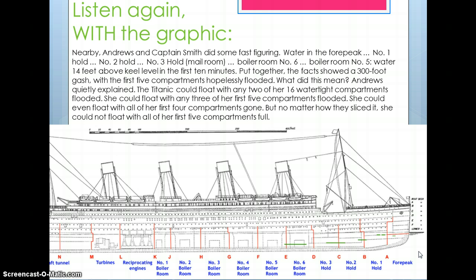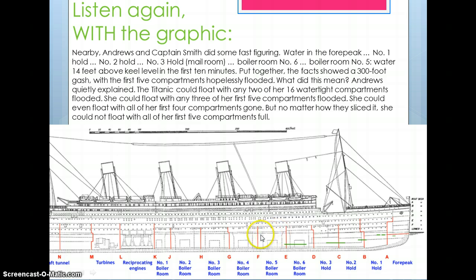Andrews and Captain Smith did some fast figuring. Water in the forepeak — so here we have the bow of the ship, which is the front end. Here's the forepeak. Number one hold. Number two hold. Number three hold, the mail room. Boiler room number six. Boiler room number five had water fourteen feet above keel level in the first ten minutes. Here's the water line right here, so the keel level in number five is right about here, and within the first ten minutes the water was already up to here.